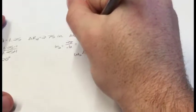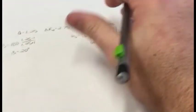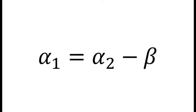To continue solving the problem, you must choose an arbitrary alpha 2 angle. In this case, we will choose alpha 2 equal to 30 degrees. Using alpha 2 and beta, we can find alpha 1 using the following: Alpha 1 equals alpha 2 minus beta.